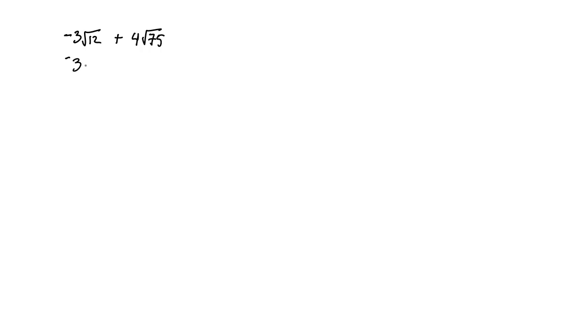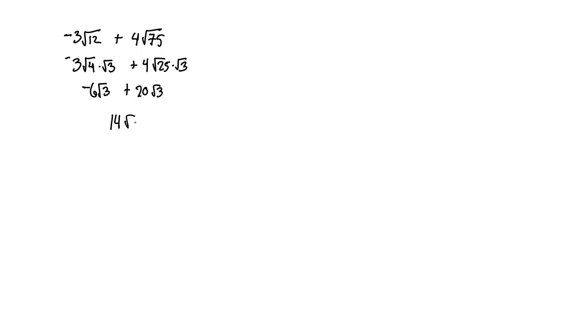To get like quantities, we simplify each radical. Root 12 is root 4 times root 3, and root 75 is root 25 times root 3. So negative 3 times root 4 gives negative 6 root 3, and root 25 is 5 so that gives 20 root 3. Now we have like radicals, so negative 6 plus 20 equals 14 root 3.